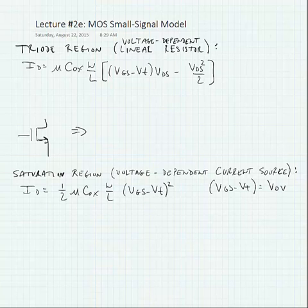In the triode region, the MOS transistor acts as a voltage-dependent resistance. We look at our current equation, and we can define the conductance that's dependent upon the voltage by taking the derivative of the current with respect to the drain-to-source voltage. If we do this, we get the following derivative.